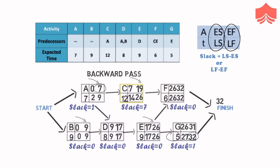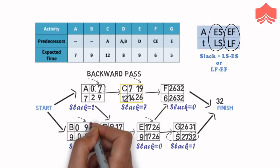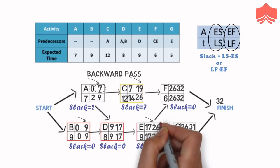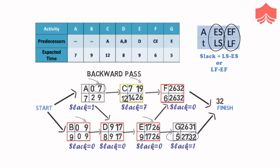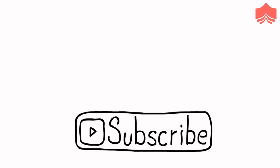All the activities with 0 slack cannot be delayed without extending the project completion time. All such activities are called critical activities. The path they form is known as the critical path, which is the longest path in the network. Here B, D, E and F form the critical path. So this was all about project scheduling and critical path. Make sure to subscribe to our channel for more such informative videos and visit our website to choose from hundreds of professional courses for your bright career ahead. Thanks so much for being with KnowledgeHut.